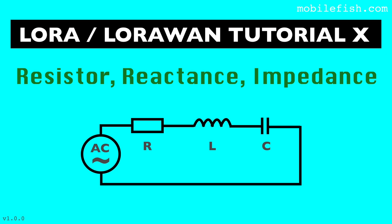LoRa end-nodes and gateways have antennas to transmit and receive signals. In this tutorial I will explain why resistance, reactance and impedance play an important role in antennas. I am not an antenna or electronics engineer. My goal is to explain the most common antenna terms in the simplest possible way. This and subsequent tutorials are all related to antenna topics, because using the correct antenna is important when working with gateways and end-nodes.